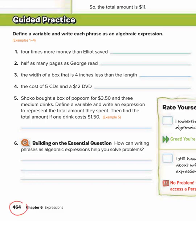Okay, we are on workbook page 464. Today we're doing chapter 6, lesson 4. We want to define a variable and then write each phrase as an algebraic expression. Remember, algebraic means has letters and an expression means no equal sign.